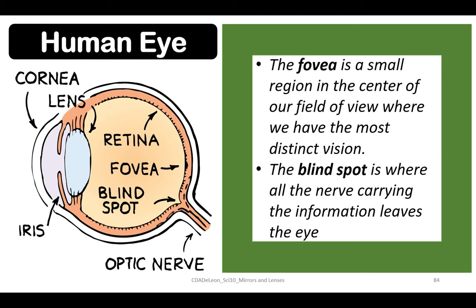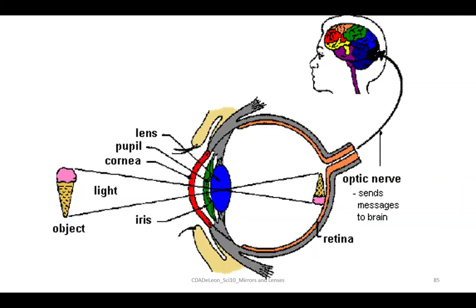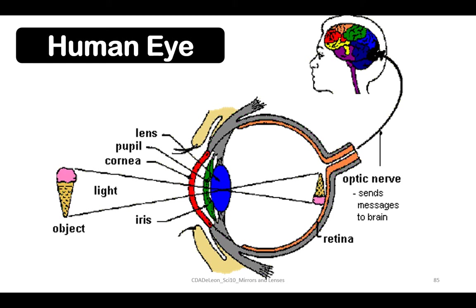The fovea is a small region in the center of our field of view where we have the most distinct vision, while the blind spot is where all the nerves carrying information leave the eye. So the human eye is an example of an optical instrument.